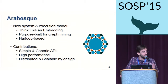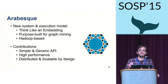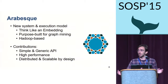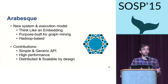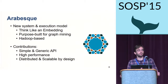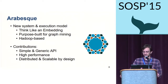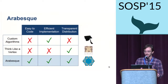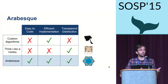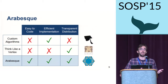Our objective with Arabesque was to develop a new system and execution model designed from scratch for graph mining algorithms. What we want to do with Arabesque is do for graph mining what Pregel did for graph analytics. We achieved this by providing the user with a simple and generic API specially designed for these algorithms and a highly efficient and distributable execution engine. Our objective is to make it easy to develop highly efficient distributed graph mining algorithms.